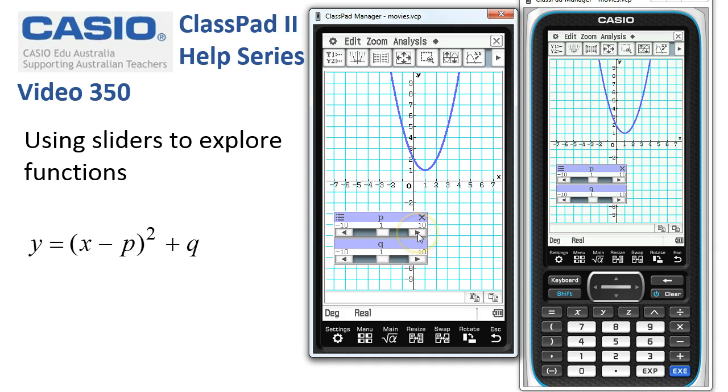So if I tap to increase p here, we can see that the function is moving to the right. And if I tap to the left, it's moving to the left.